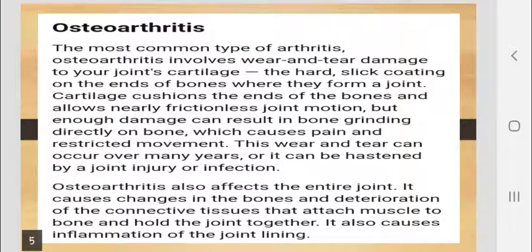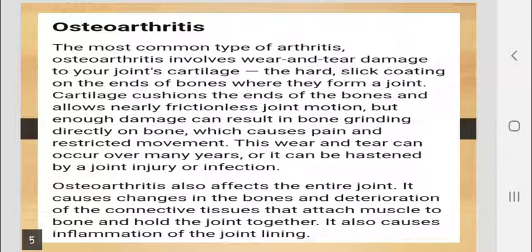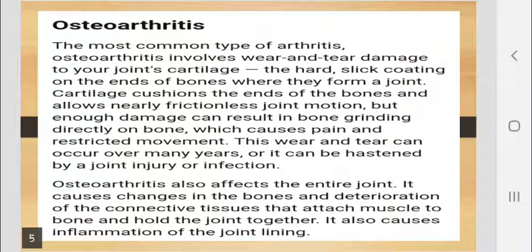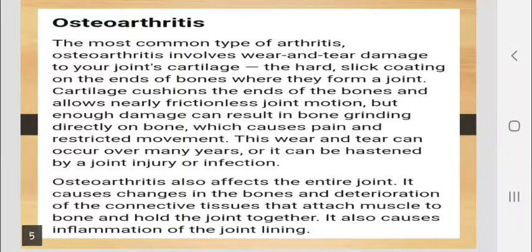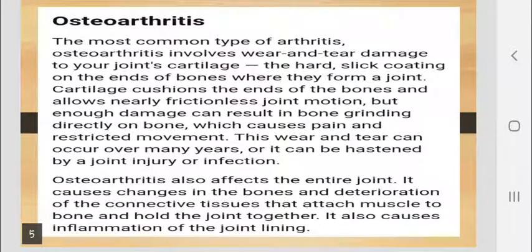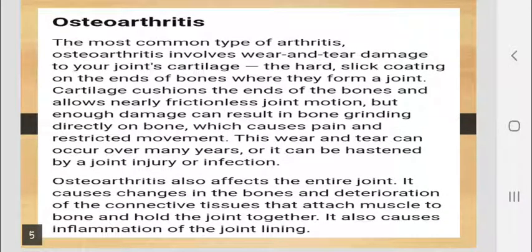The most common type of arthritis, osteoarthritis, involves wear and tear damage to your joint cartilage — the hard, slick coating on the ends of bones where they form a joint. Cartilage cushions the ends of the bones and allows nearly frictionless joint motion, but enough damage can result in bone grinding directly on bone, which causes pain and restricted movement. The function of cartilage is to cushion your bones and prevent friction during movement.